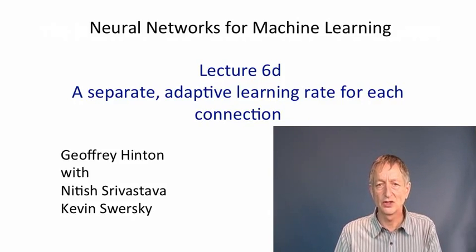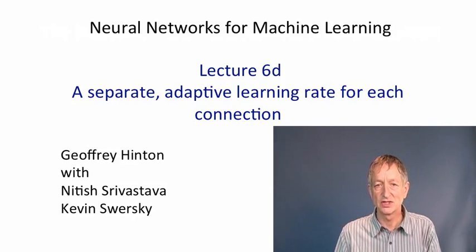In this video, we're going to look at a method developed in the late 1980s by Robbie Jacobs and then improved by a number of other people. The idea is that each connection in the neural net should have its own adaptive learning rate, which we set empirically by observing what happens to the weight on that connection when we update it. If the weight keeps reversing its gradient, we turn down the learning rate, and if the gradient stays consistent, we turn up the learning rate.